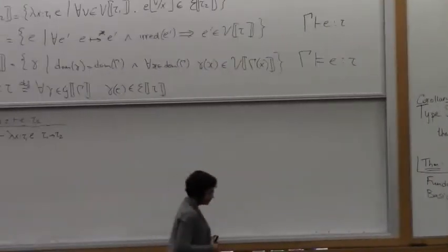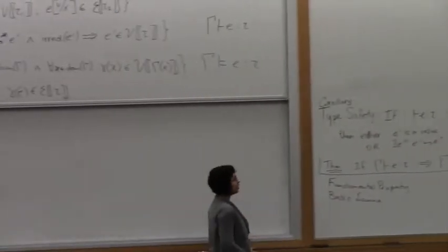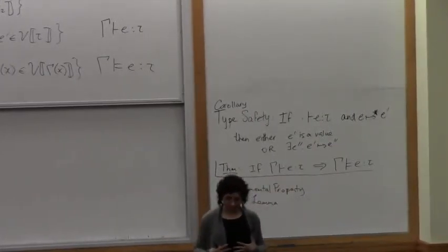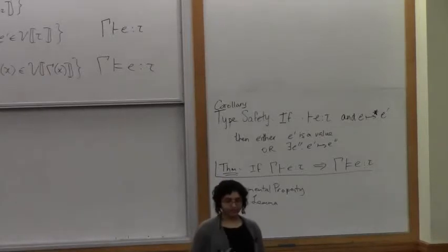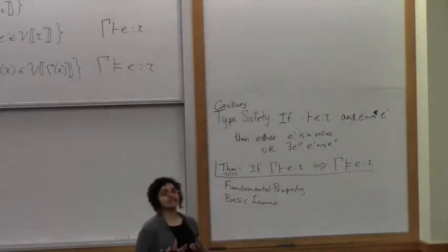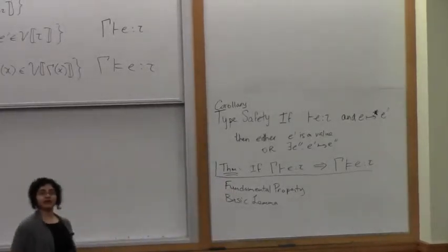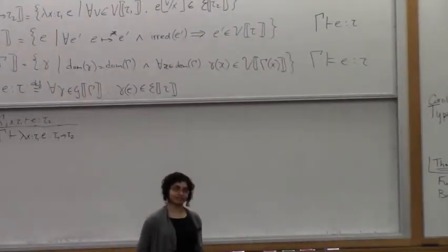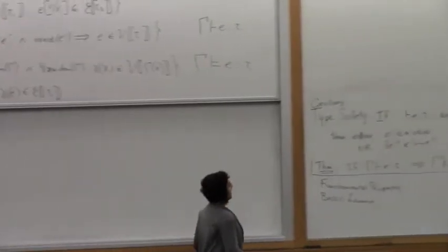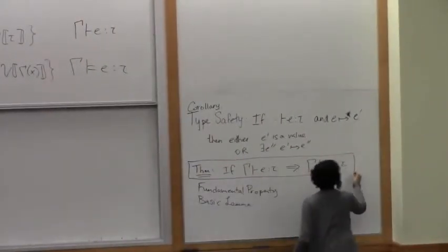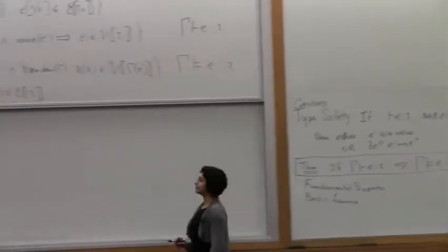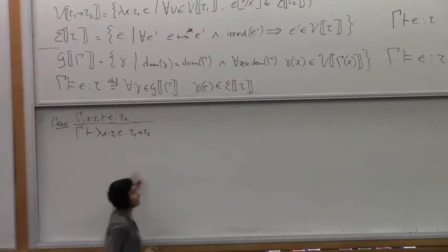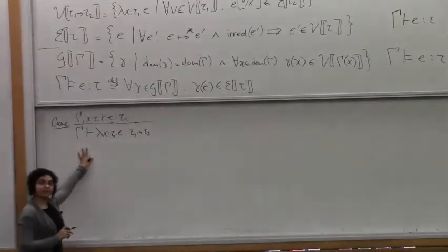Whenever you do this sort of thing, you set up a logical relation, and you always then have to go and prove a fundamental property, which tells you something about your logical relation being internally consistent. So this is the fundamental property that we're proving. We're proving it by induction on the derivation, and we are going to consider the lambda case.